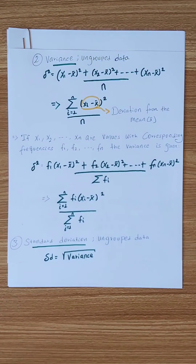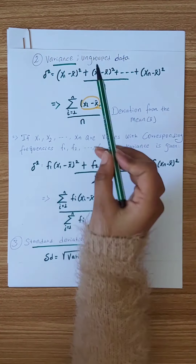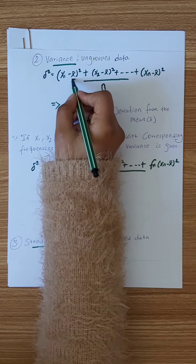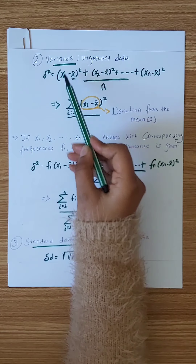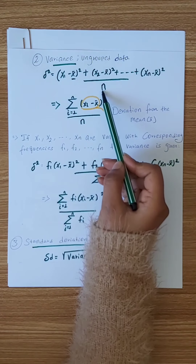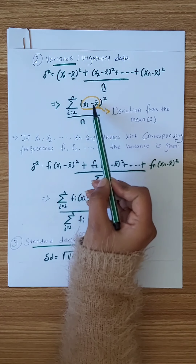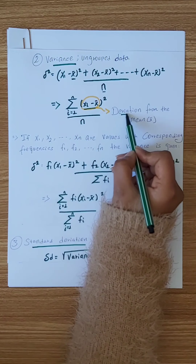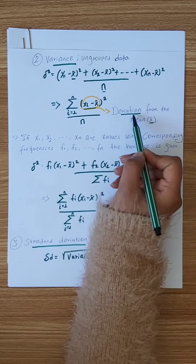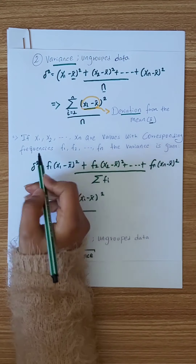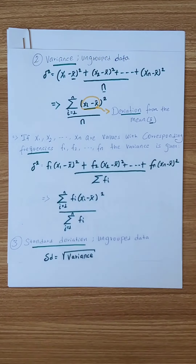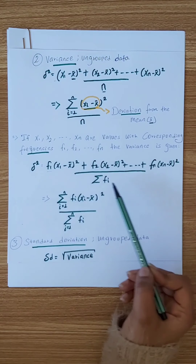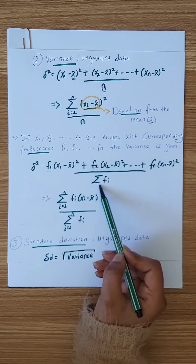We have variance for grouped data. We have a value divided by the number of observations. The value of the division is divided by the total number of observations.